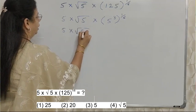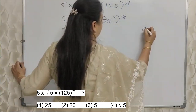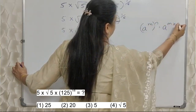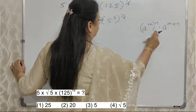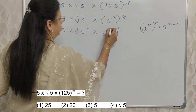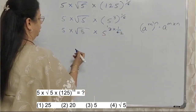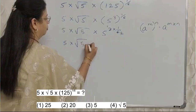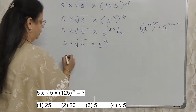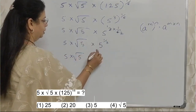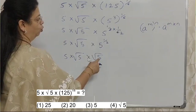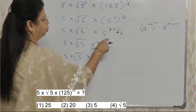So as per the rule of indices, we are going to make use of this rule here. So what we will do? 3 into 1 upon 6. 3 ones are 3, 3 twos are 6. So ultimately we will get 1 upon 2. 1 upon 2 is same as root 5. Root 5, or root of 5, is same as 5 raised to the power 1 upon 2, that is half.